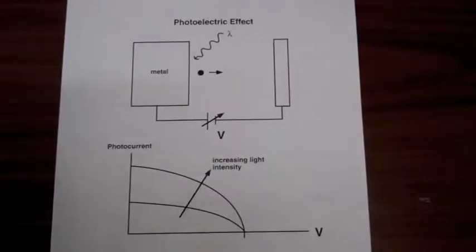This emission of electrons from a metal on which an electromagnetic wave is shining is referred to as the photoelectric effect.